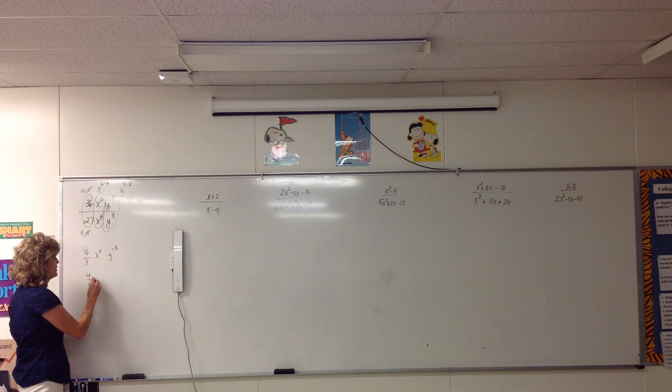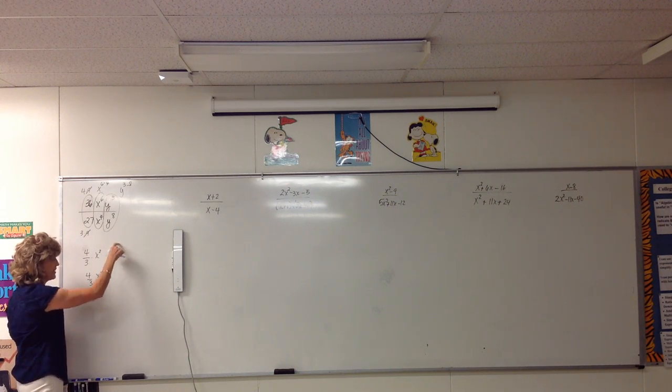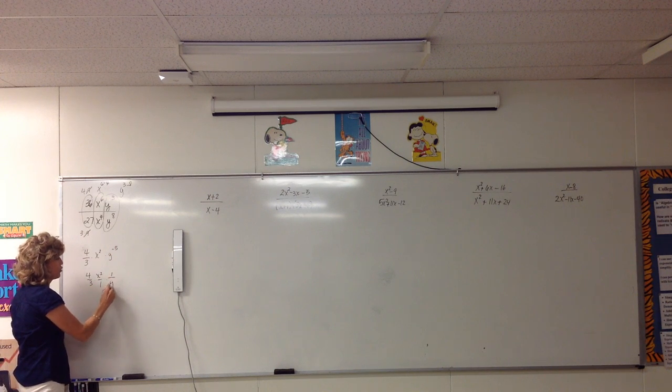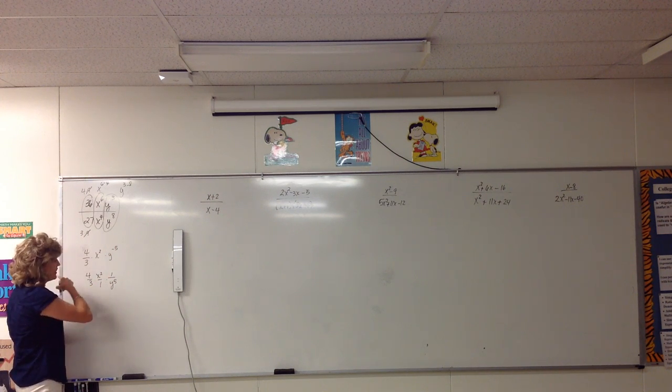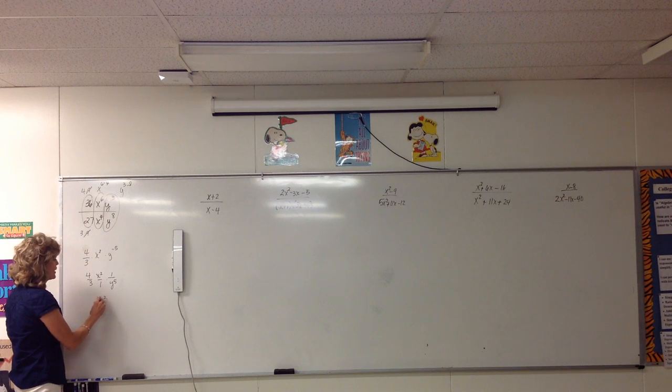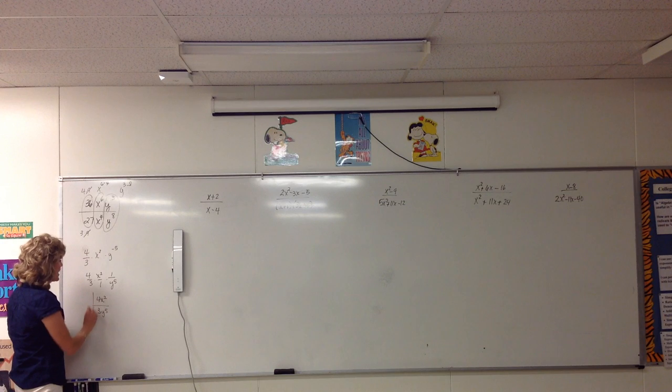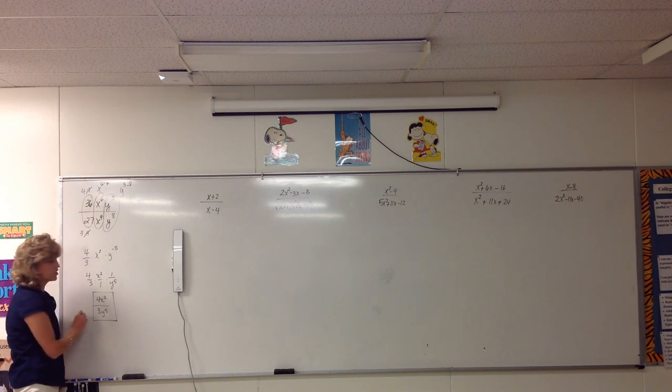So we'll have 4 over 3. And x squared is on top. And instead of y to the negative 5, we'll write it as 1 over y to the 5th. Now multiply straight across the top to get 4x squared and straight across the bottom to get 3y to the 5th. And here is the simplified version of the fraction.